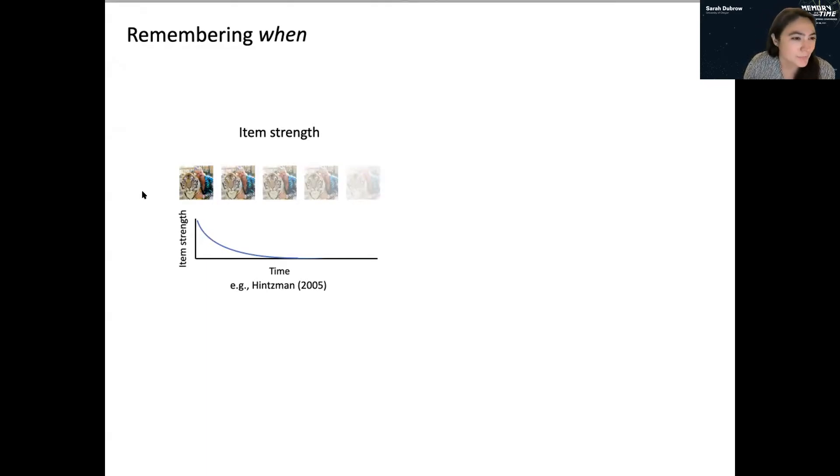So, for example, if you're lucky, maybe your memory for Tiger King has slowly faded away and decayed over time, and that is the general trajectory of how memories fade. And because their strength declines with time, that means that they're correlated so you can actually use item strength to infer how much time has passed. And there's actually some really nice behavioral data suggesting that manipulations of item strength independent of time can actually distort your memory for when things occurred.